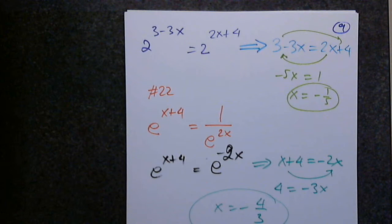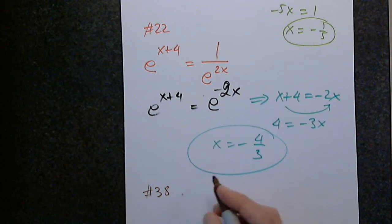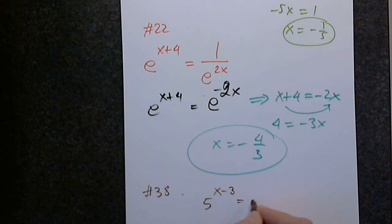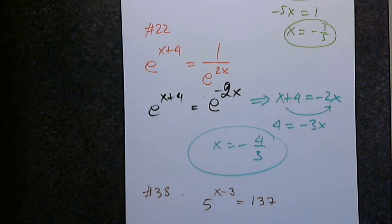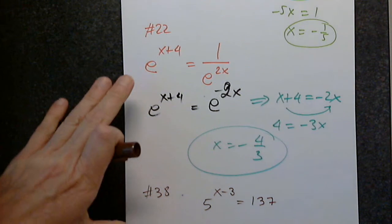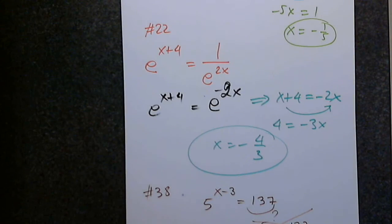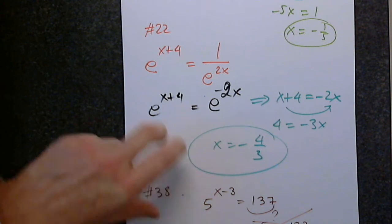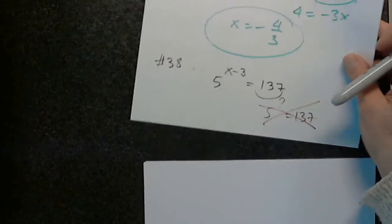Let's look at 38: five raised to x minus three equals 137. Don't even try — five and 137 will never be able to be presented with the same base. There is no integer power of five that gives 137. So let's connect this to the next concept, using the inverse function.